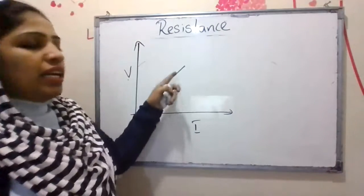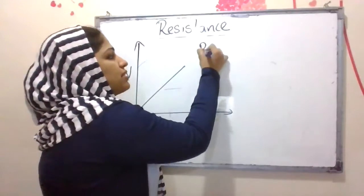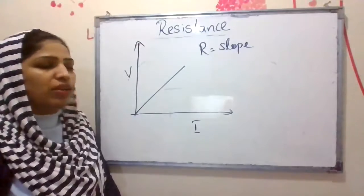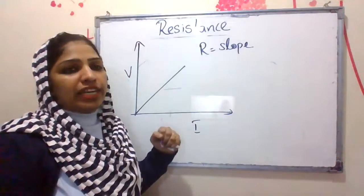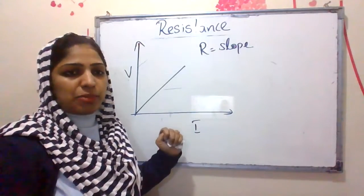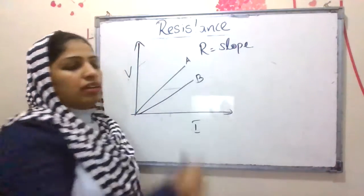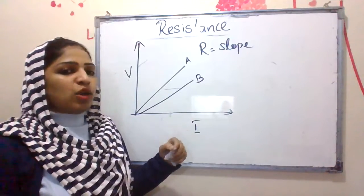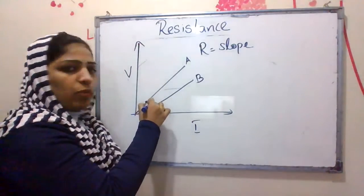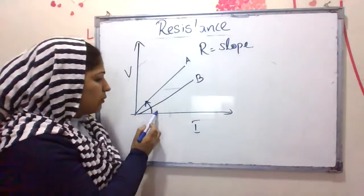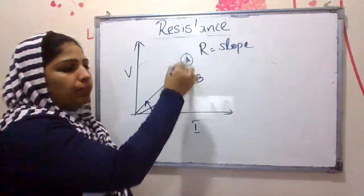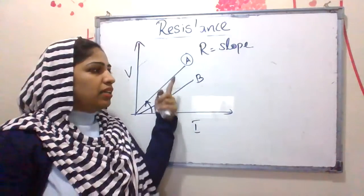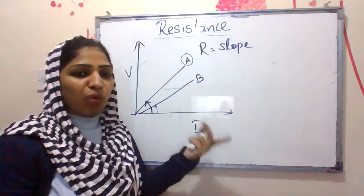Because V is proportional to I, we get a straight-line graph. R is equal to the slope of the V-I graph. The slope of the V-I graph gives the value of resistance. For two wires A and B plotted on a V-I graph, the one with a higher slope has higher resistance. Slope is more for A and slope is less for B, so resistance of A is more than resistance of B.